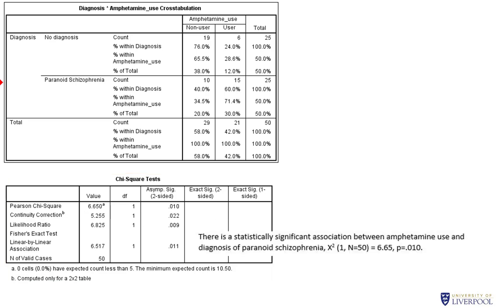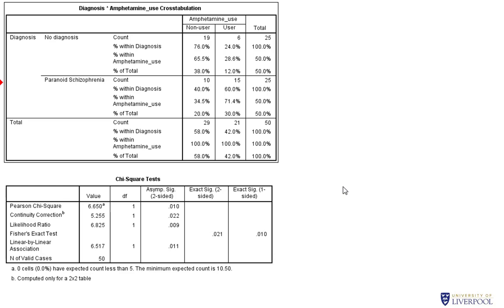We'd write that up just like this — you could say something like: there is a statistically significant association between amphetamine use and diagnosis of paranoid schizophrenia, then refer your reader to the table.